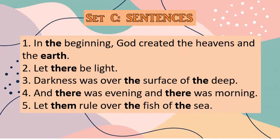Let's proceed to our sentences. Number one: In the beginning God created the heavens and the earth. Number two: Let there be light. Number three: Darkness was over the surface of the deep. Number four: And there was evening, and there was morning. Number five: Let them rule over the fish of the sea. Alright, thank you so much.